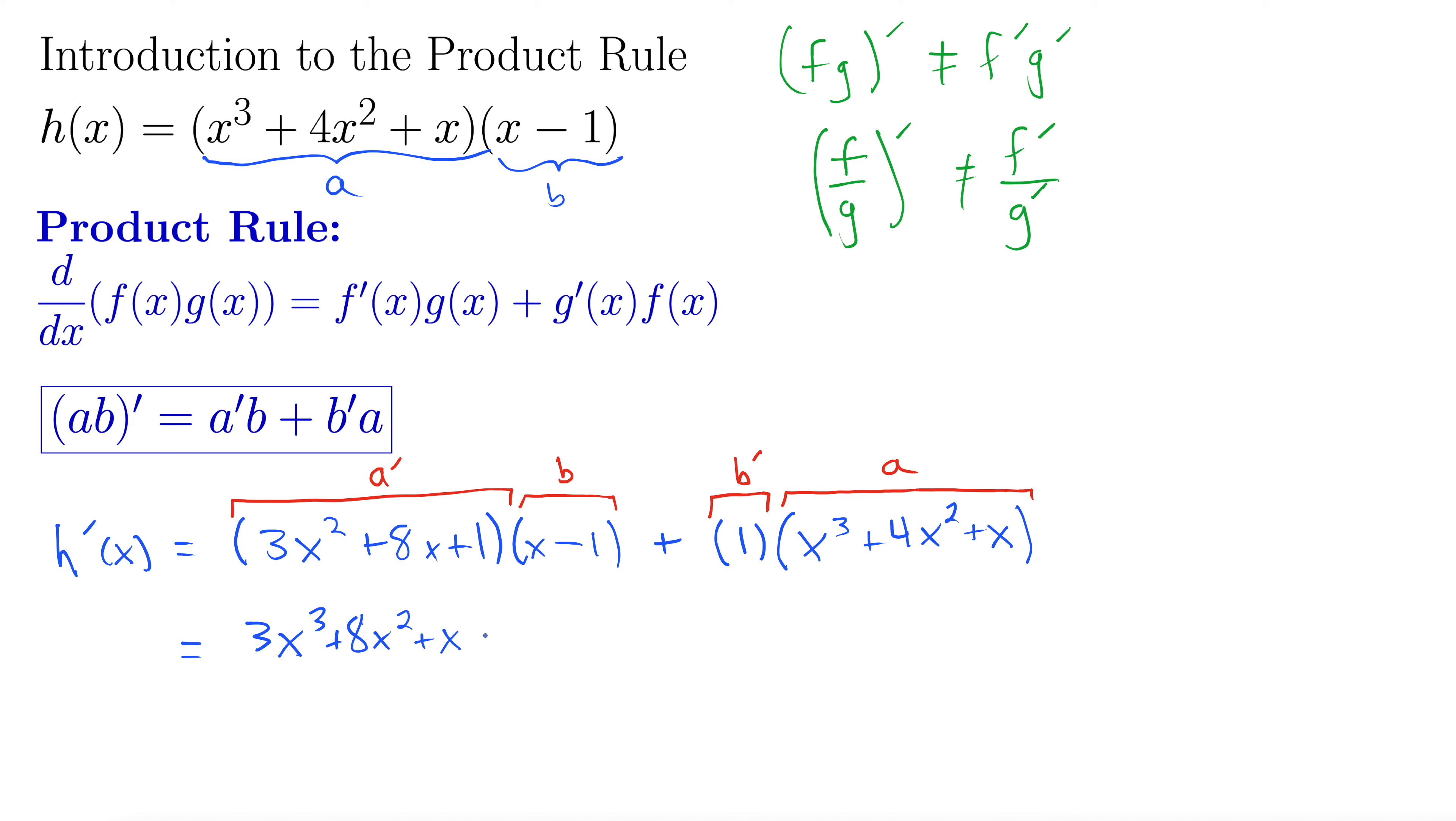And then minus 1 to all those terms. So minus 3x² minus 8x minus 1. And then here we simply have plus x³ plus 4x² plus x.